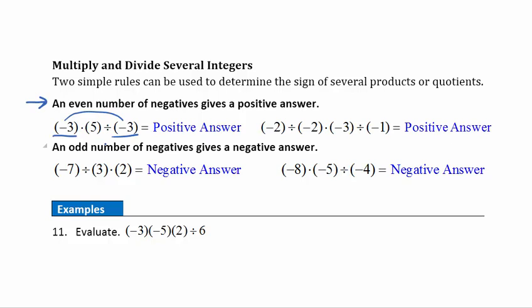In the second example I count 1, 2, 3, 4 negatives, which is also even, giving a positive answer. The next rule: an odd number of negatives gives us a negative answer. With 1 negative we get a negative answer. With 3 negatives, the first two pair up to make a positive, and the 1 remaining negative gives a negative answer, because we end up with a positive times a negative.